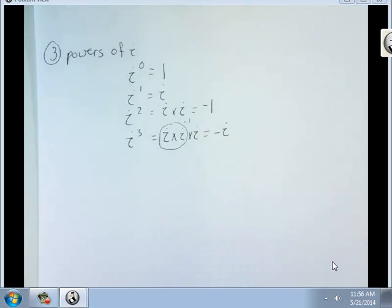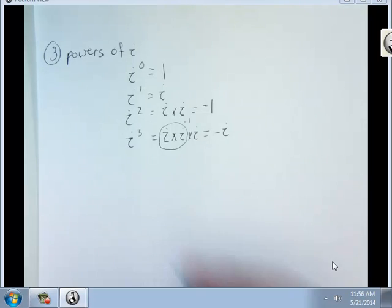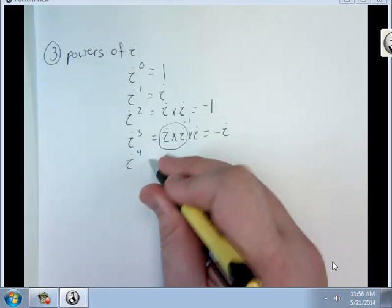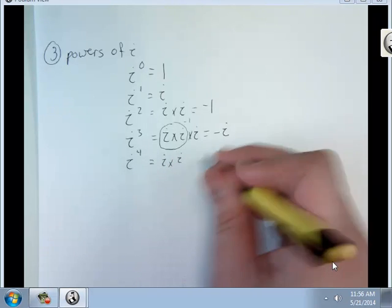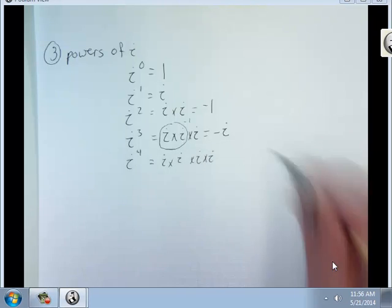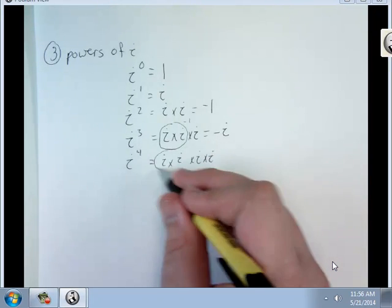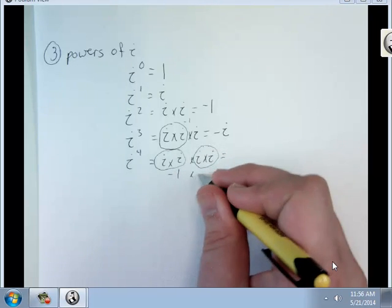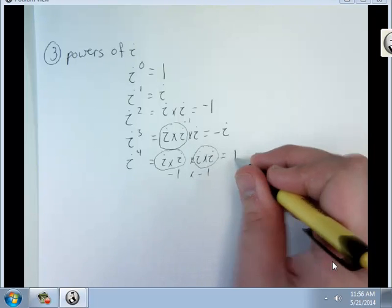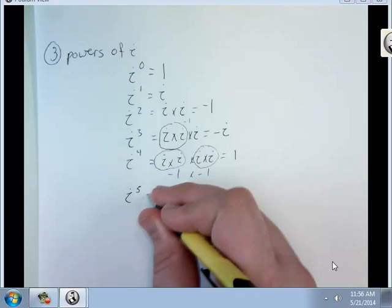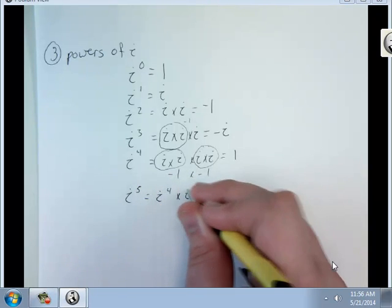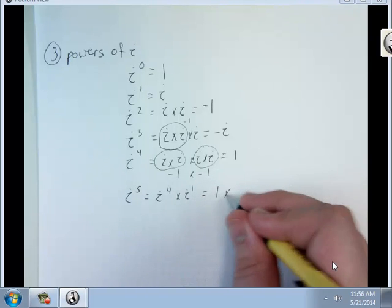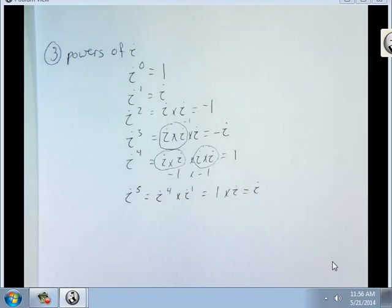Then i to the 4th equals i times i times i times i. We know this is negative 1. We know this is negative 1. Negative 1 times negative 1 is positive 1. And it actually repeats like this. i to the fifth is just i to the fourth times i to the first, which is 1 times i, which is i. And it just keeps going like this, forever.